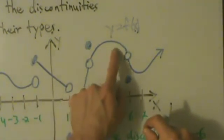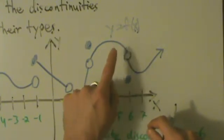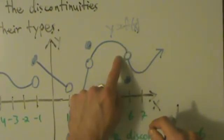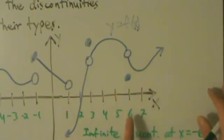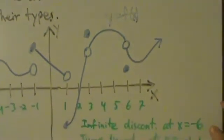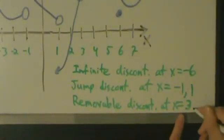Alright? So continuing along this piece, everything's fine up through here. And then we see another hole, or another removable discontinuity here at x equals 6. So there's another removable discontinuity at x equals 6.